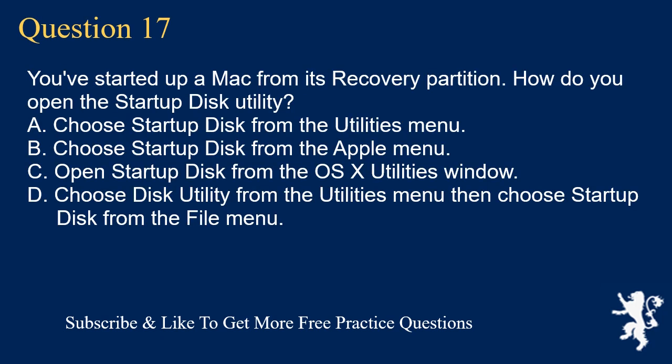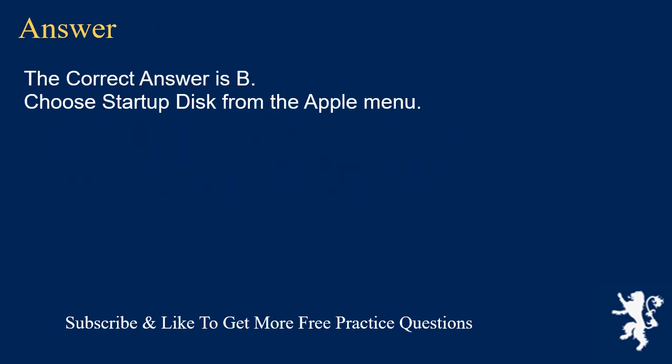Question 17. You've started up a Mac from its recovery partition. How do you open the startup disk utility? A. Choose Startup Disk from the Utilities menu. B. Choose Startup Disk from the Apple menu. C. Open Startup Disk from the OSX Utilities window. D. Choose Disk Utility from the Utilities menu, then choose Startup Disk from the File menu. The correct answer is B: Choose Startup Disk from the Apple menu.